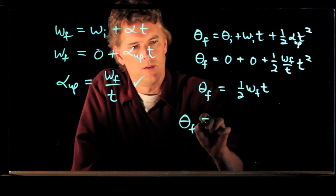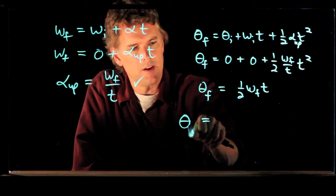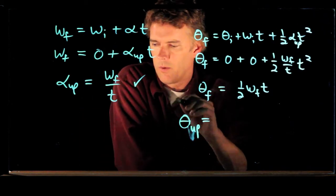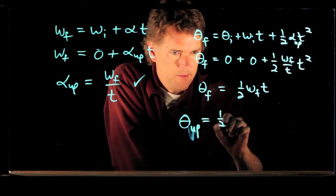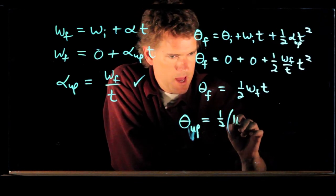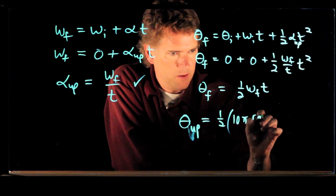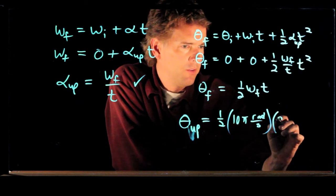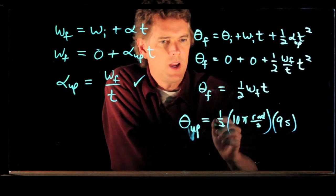Theta final, or theta specifically, let's talk about the spin up. Theta up equals one half times omega final, which we said was 10 pi radians per second. We're going to multiply by how long it took. We gave that to you, 9 seconds.